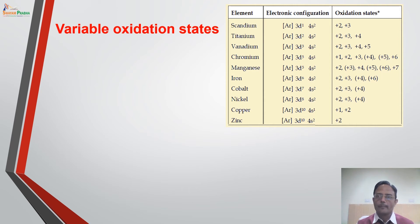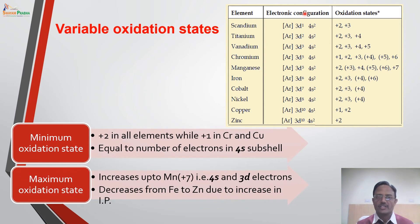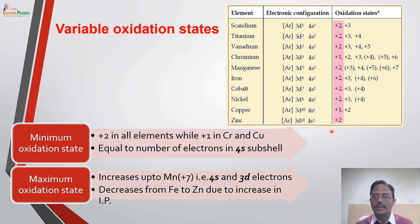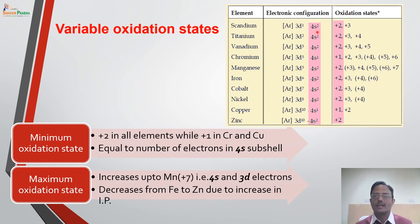We will discuss some important properties of these variable oxidation states. What is the minimum oxidation state in all these elements? The minimum oxidation state is either +2 or +1. Most elements show +2 as minimum oxidation state, while only chromium and copper show +1 as minimum oxidation state. The reason lies in the electronic configuration — chromium has a 4S1 configuration and similarly copper has a 4S1 configuration. By losing the electron from 4S, they can show +1 oxidation state. In general, the minimum oxidation state equals the number of electrons present in the 4S subshell.